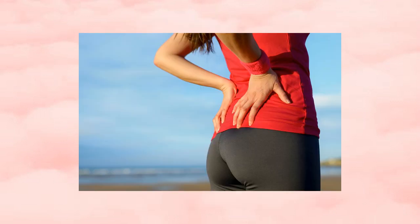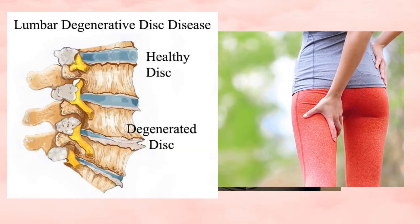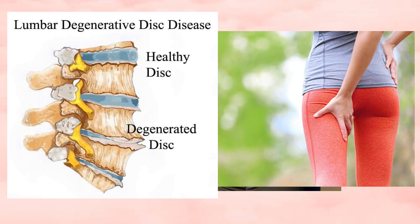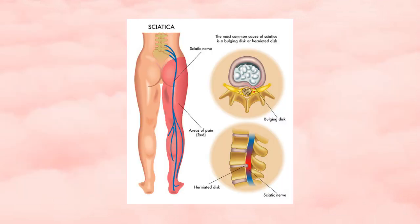Some patients complain of pain in the lower back which may radiate to the back of the thigh. This is mainly because of a degenerative condition of the spine, commonly called lumbar spondylosis. Patients who complain of low back pain radiating to the entire leg up to the toes mainly have a prolapsed or slipped disc.